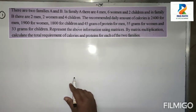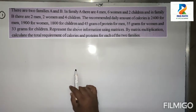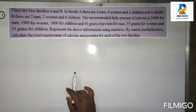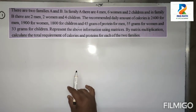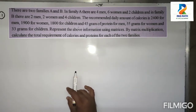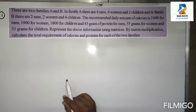There are two families A and B. In family A there are four men, six women, two children. In family B there are two men, two women, and four children. The recommended daily amount of calories is 2400 for men, 1900 for women, 1800 for children, and 45 grams of protein for men, 55 grams for women, and 33 grams for children.